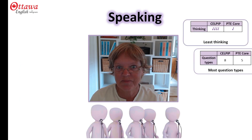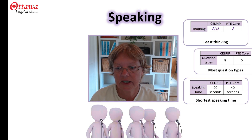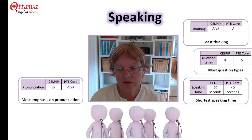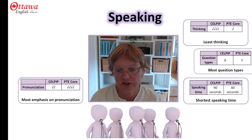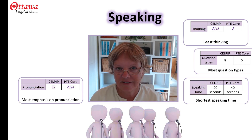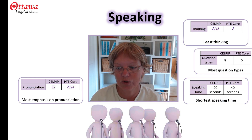PTE Core requires the shortest speaking time. Its longest response is 40 seconds, whereas CELPIP requires two 90-second responses. PTE Core also tends to focus very heavily on pronunciation and intonation — so how you sound when you speak English. Don't worry about having an accent, but do make sure that you speak clearly in both tests. Smiling while you're speaking helps to increase the clarity of what you're saying.